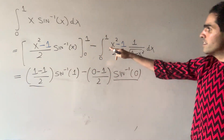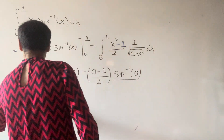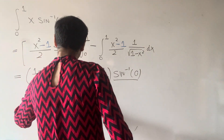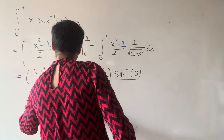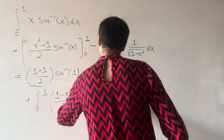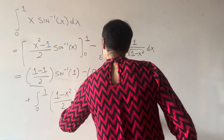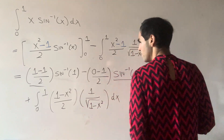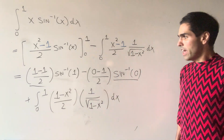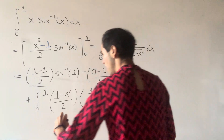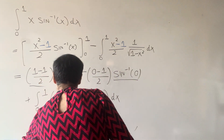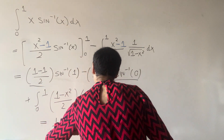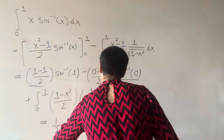Then this becomes plus the integral from zero to one of square root of one minus x squared over two, times one over the square root of one minus x squared. This just ends up becoming one half times the integral from zero to one of square root of one minus x squared.